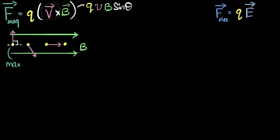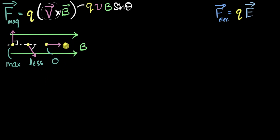For the second proton, it has the same charge, same speed, same magnetic field, but the angle is smaller. So sine theta is less than one, and therefore the force is less than before. For the third proton, the velocity and field are in the same direction, so theta is zero. Sine of zero is zero, meaning this charge experiences no magnetic force at all. The fourth proton is not moving, so there is no velocity, and it also experiences no force. What we see is that the magnetic force highly depends on the direction of the velocity.